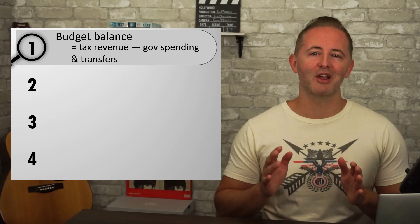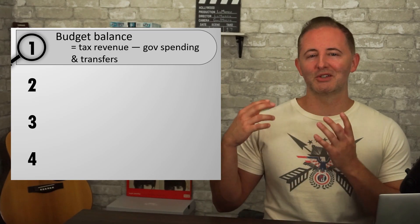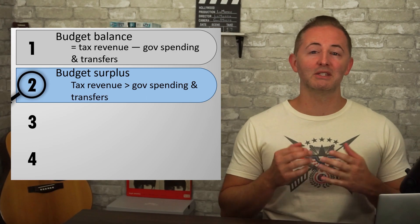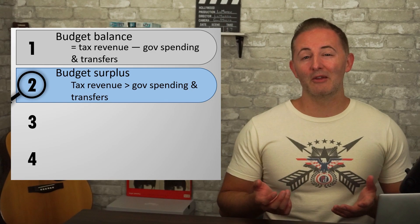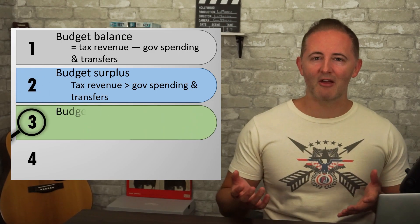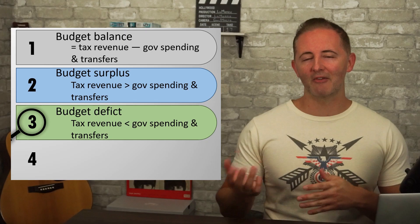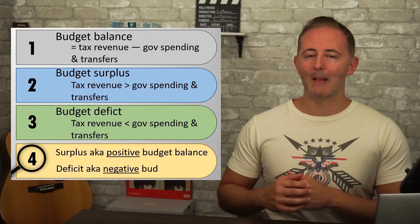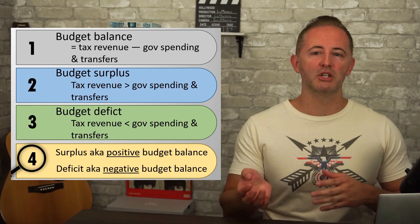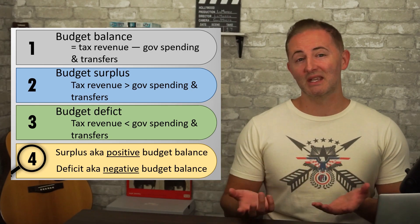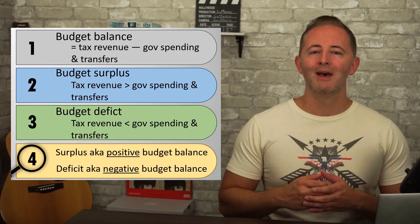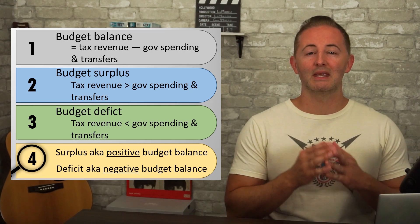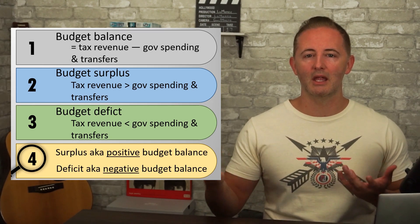On the extremely rare circumstances when tax revenue is greater than government spending and transfers, the federal government has a budget surplus. On the much more likely event that tax revenue is less than government spending and transfers, the government is running a budget deficit — also called a negative budget balance. The other technically possible option is a balanced budget, in which tax revenue is exactly equal to government spending and transfers.